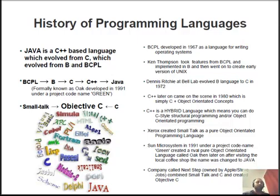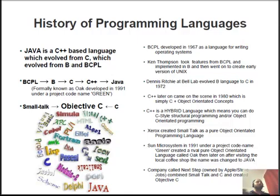C programming became very popular, but at some point it was in competition with another language called Smalltalk, which was a full-fledged object-oriented programming language. So around 1980, they took the C language and added the concepts of objects and object creation. Don't worry if you don't understand what objects and classes are yet — I'm going to explain it.